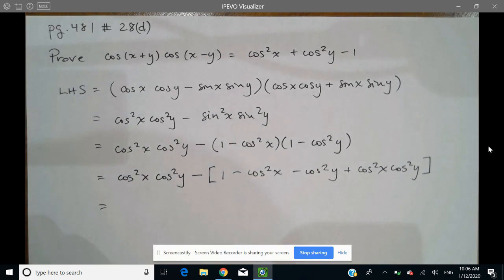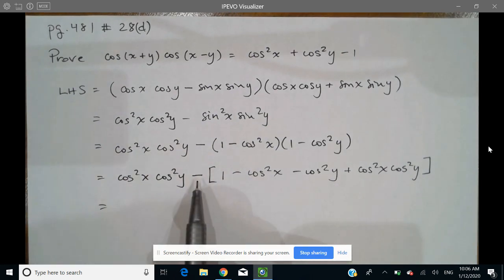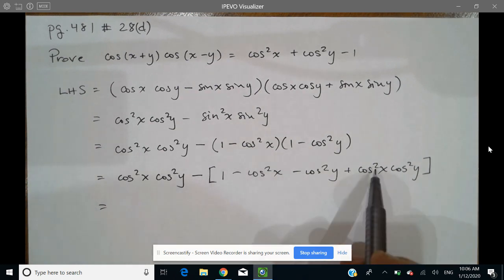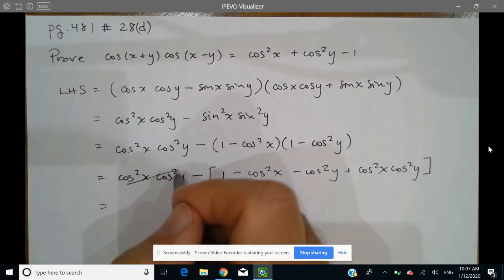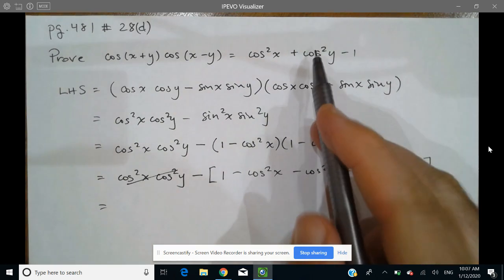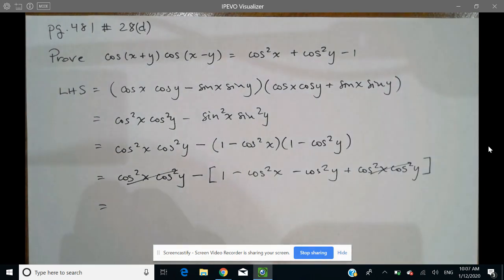And now when we take a look at this, keeping in mind that we've got this subtraction in front, we realize that we have cos squared x, cos squared y minus cos squared x, cos squared y. So that's nice because we don't see that in our right-hand side. And here again, keeping track of this negative,